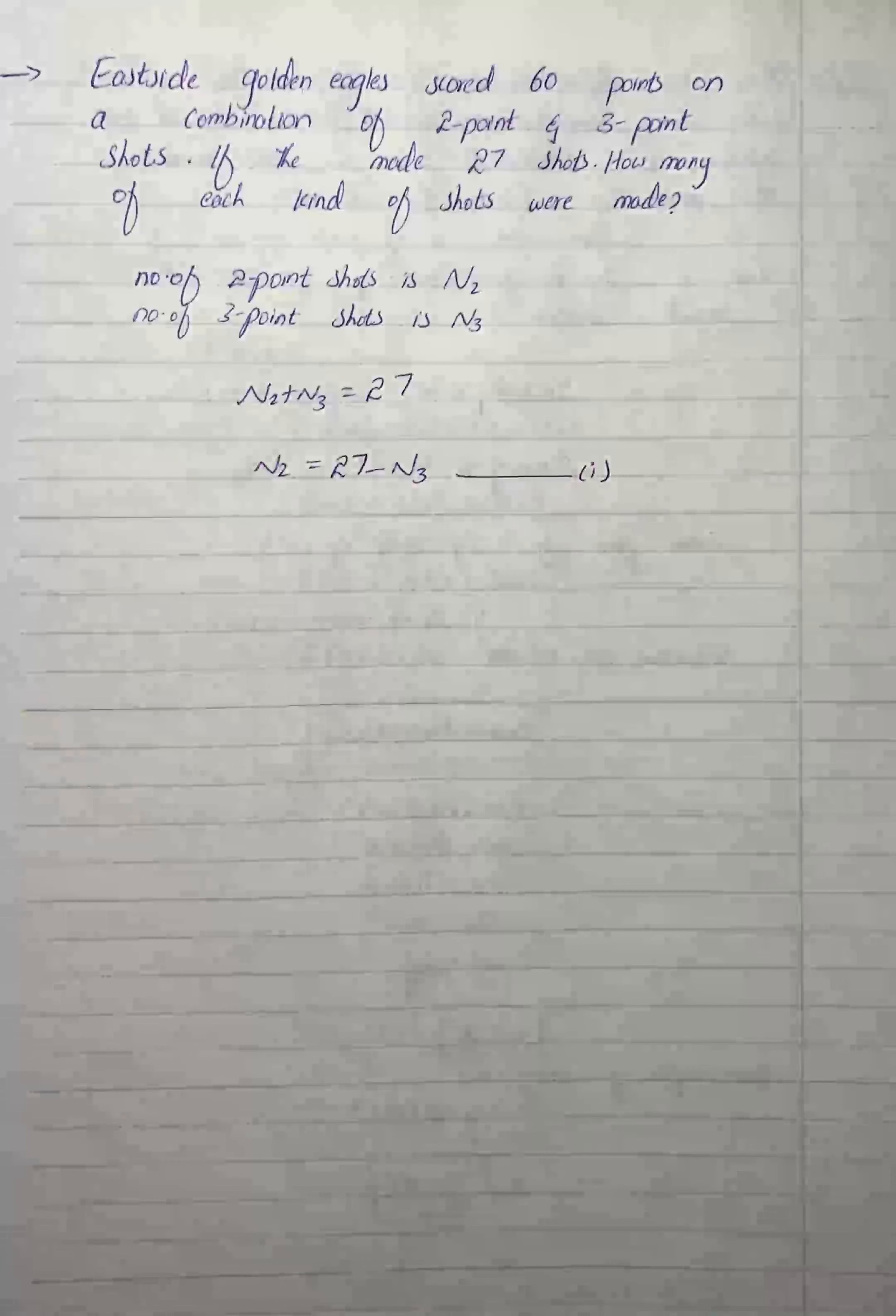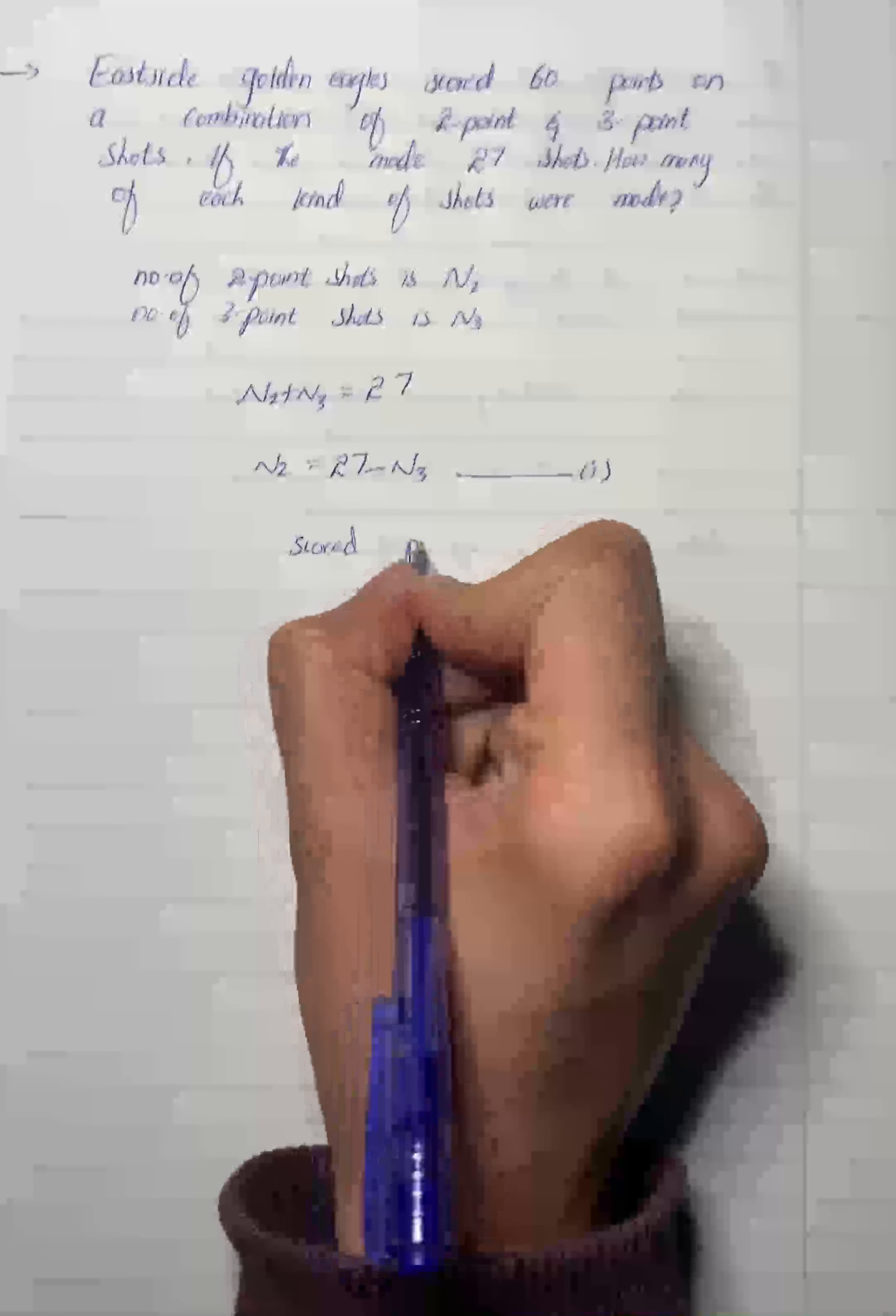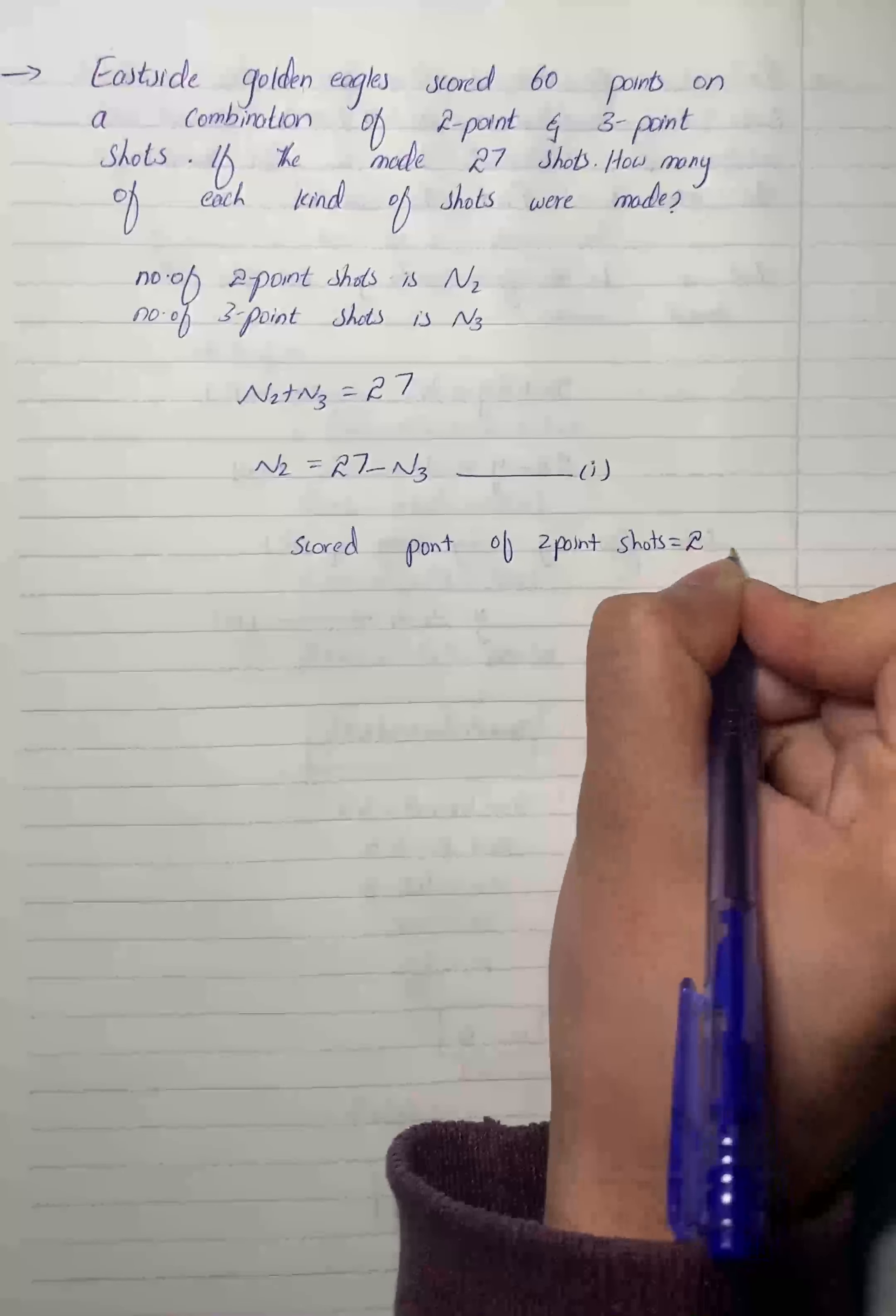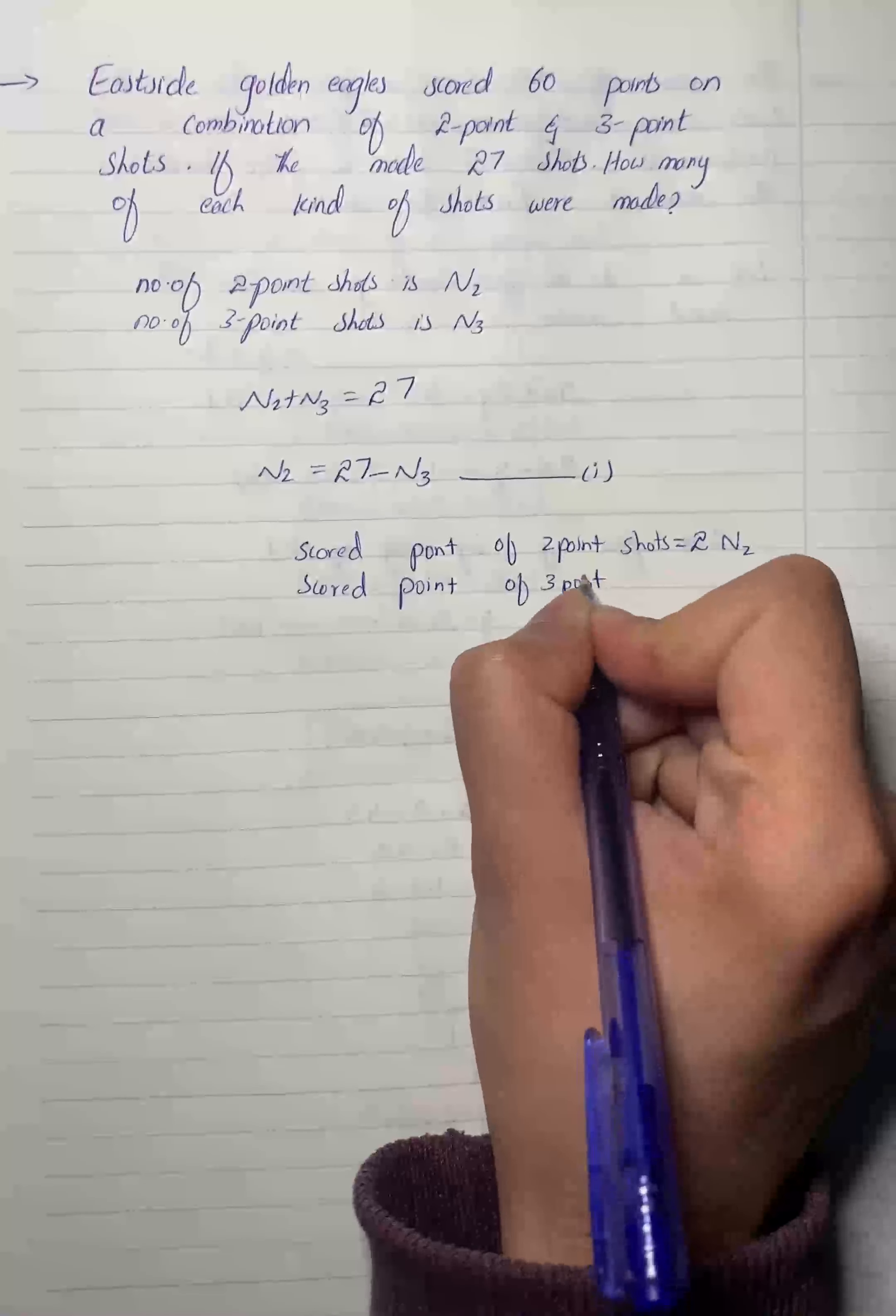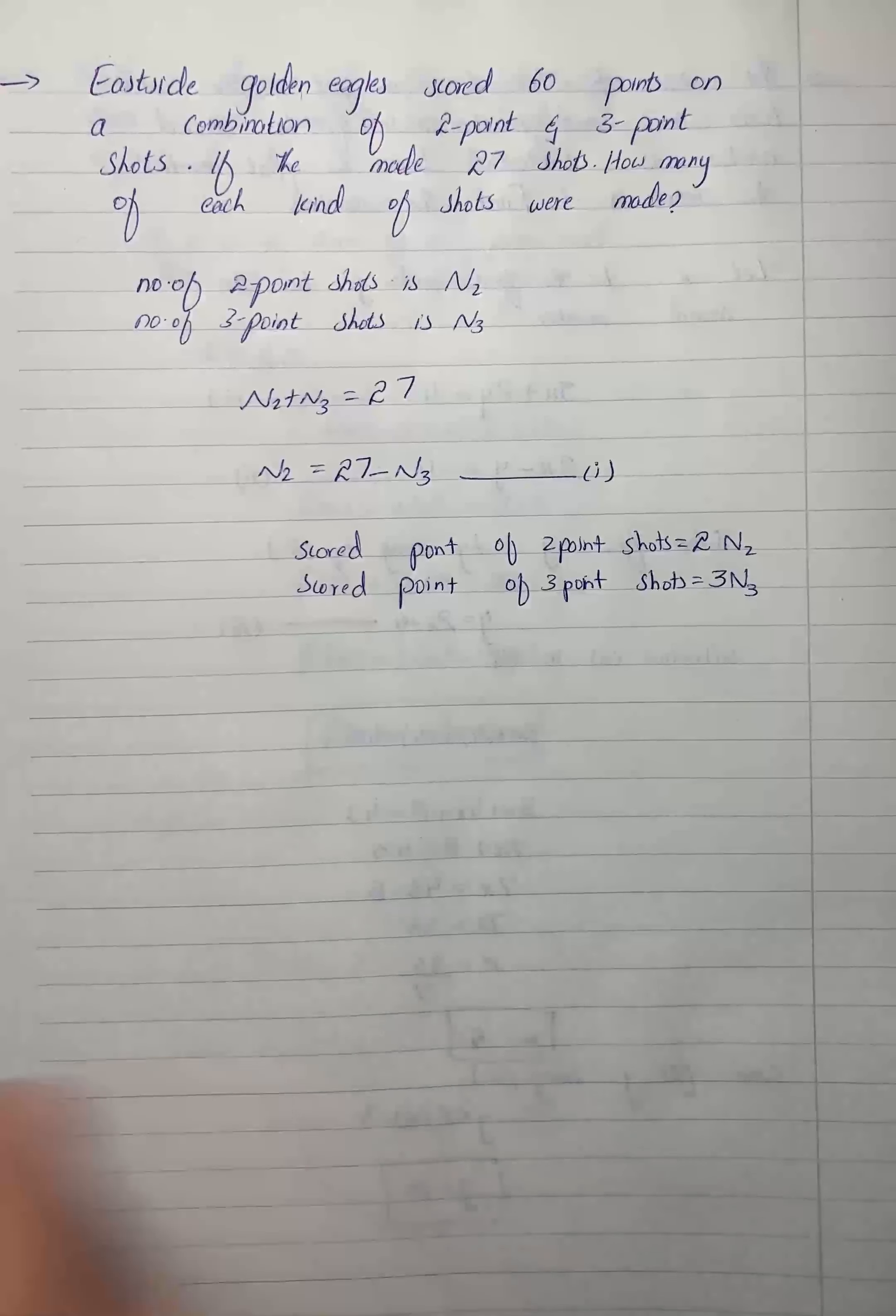So scored points of 2-point shots will be 2 times the number of 2-point shots, and scored points of 3-point shots equals 3 times n3.